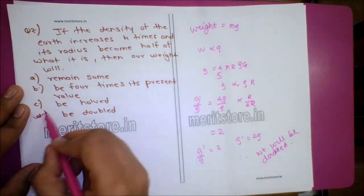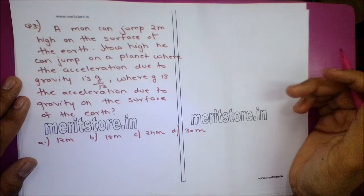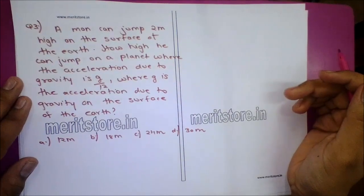So g' = 2g, meaning the weight will be doubled. Option D is the correct answer.